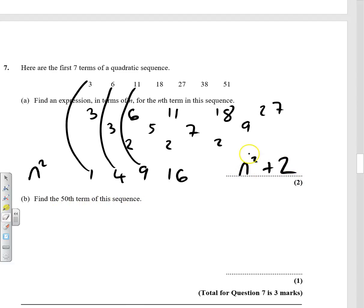Well, now we've got our rule. It is 50 squared plus 2. 50 squared is 2500, so it's 2500 plus 2, which equals 2502.